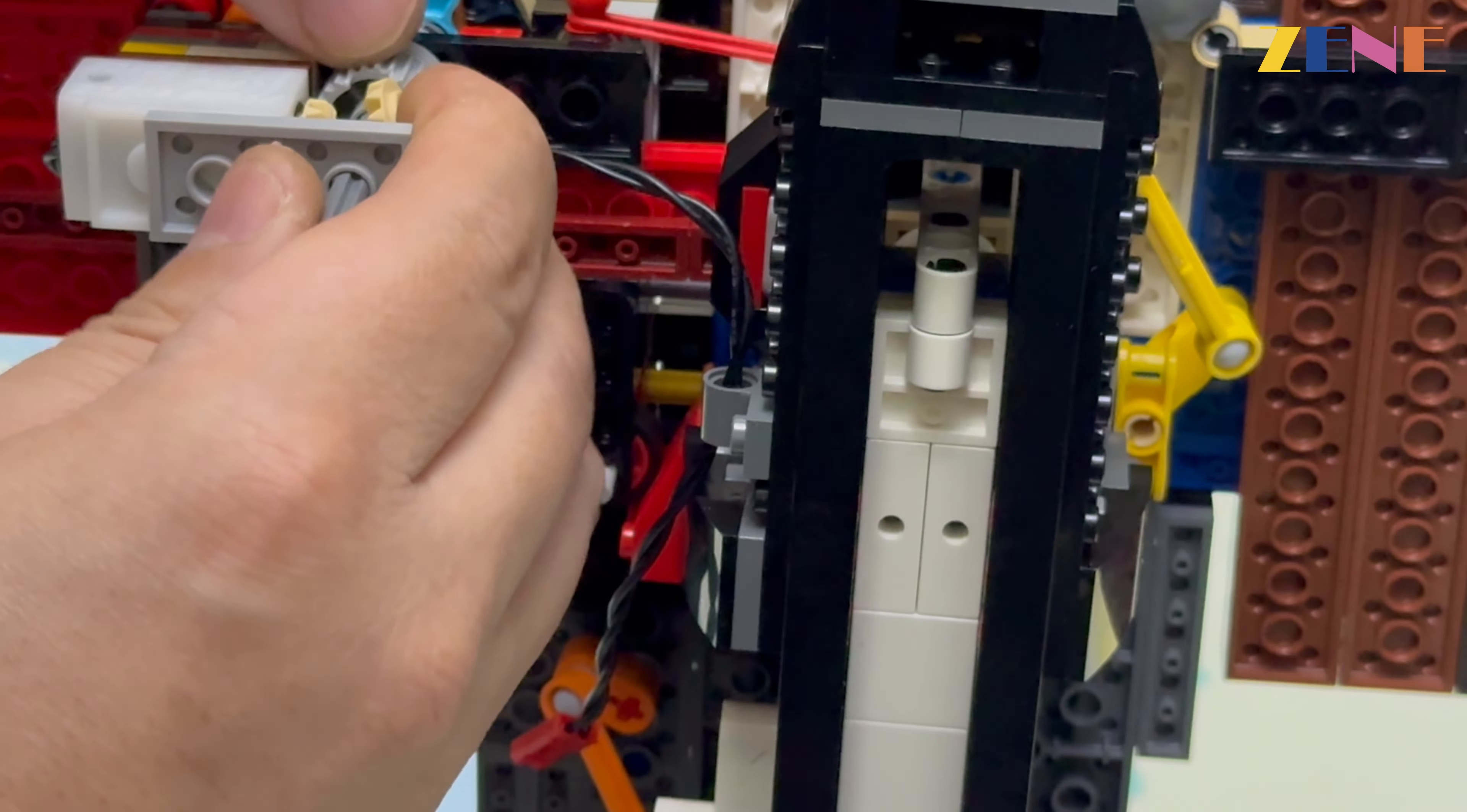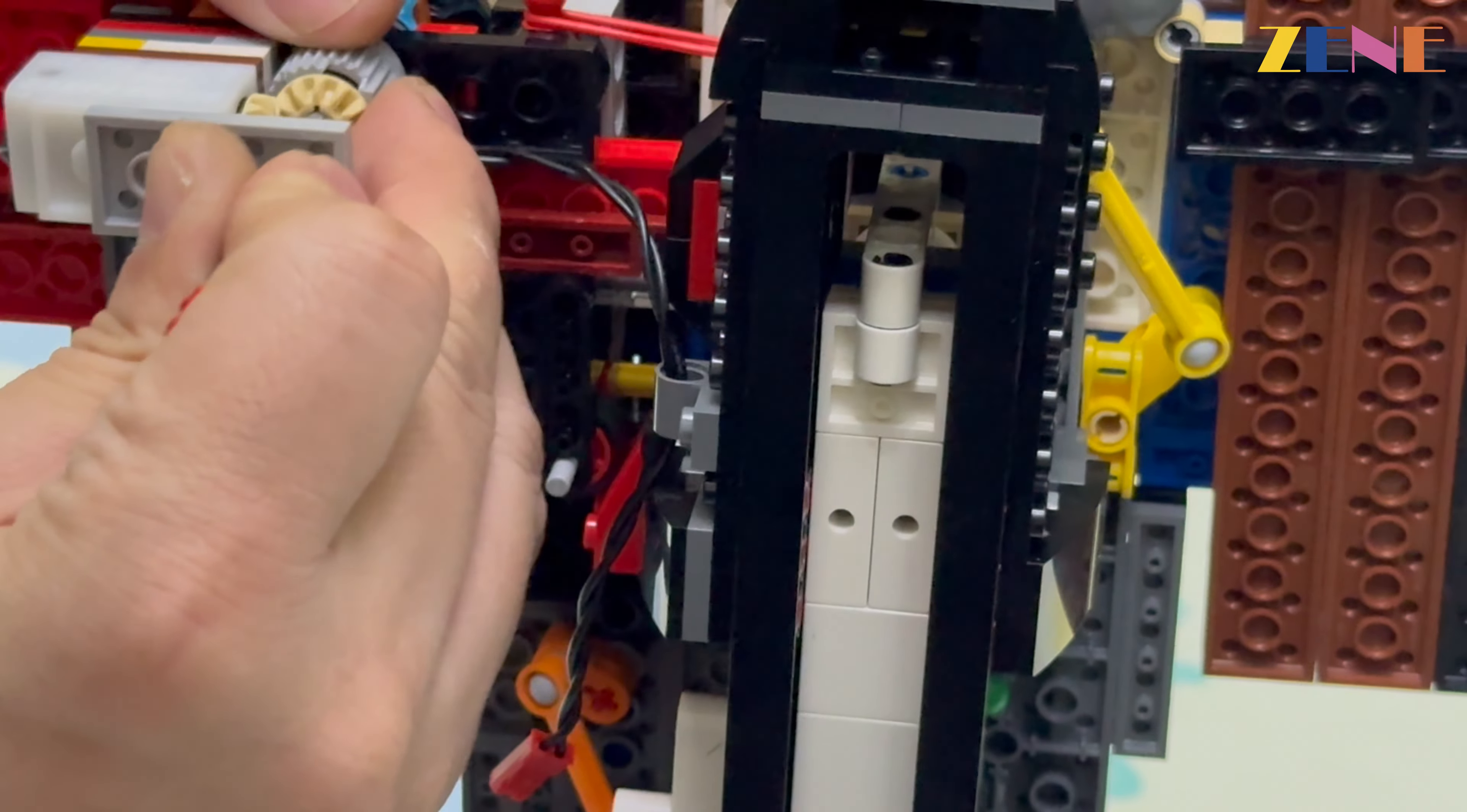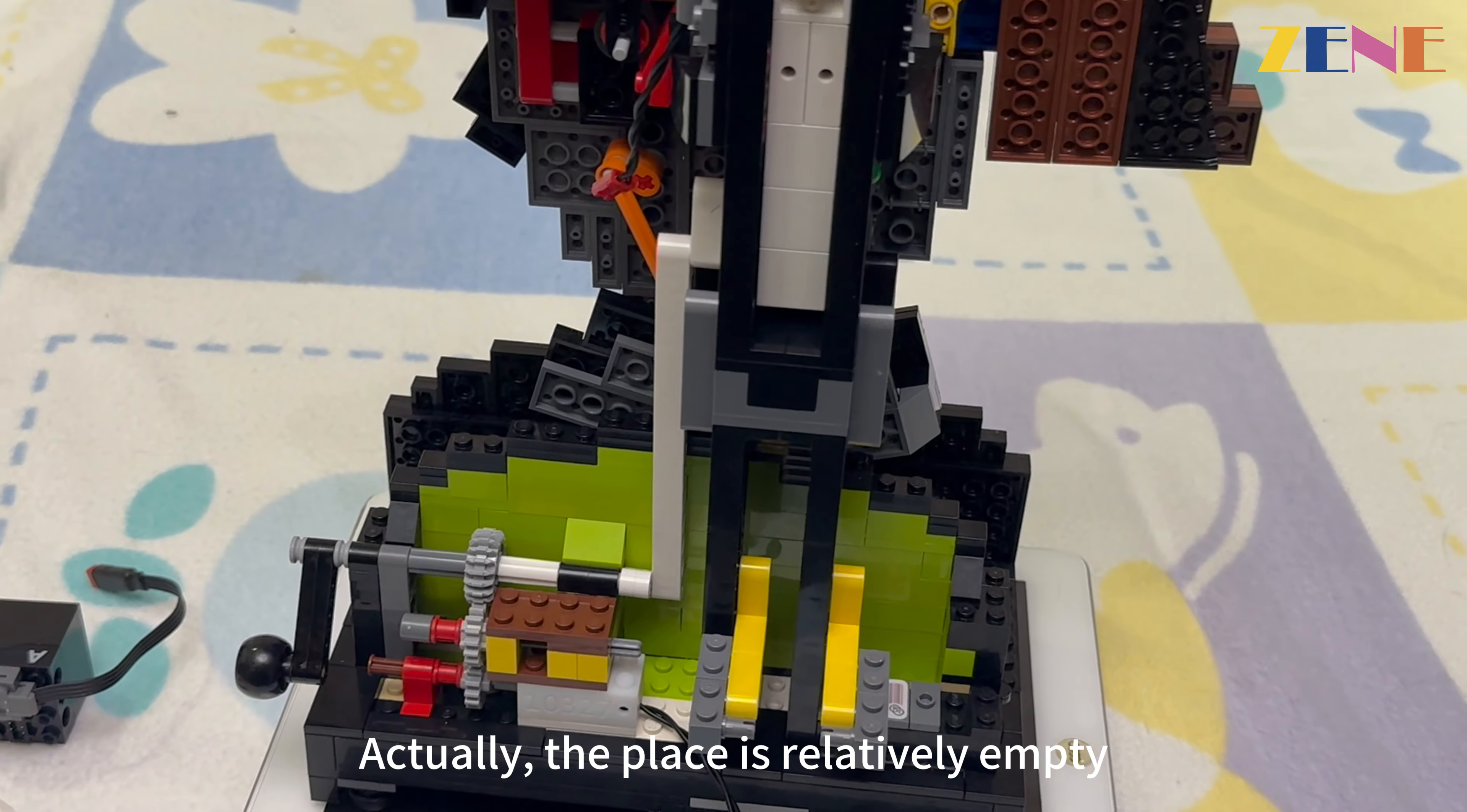Do two limited space here. It's basically done. Let me talk about the motor at the bottom. What about the motor at the bottom? When we're done, actually the place is relatively empty. Then install a motor.